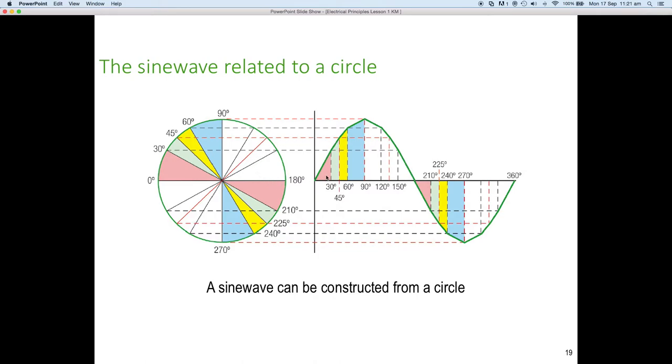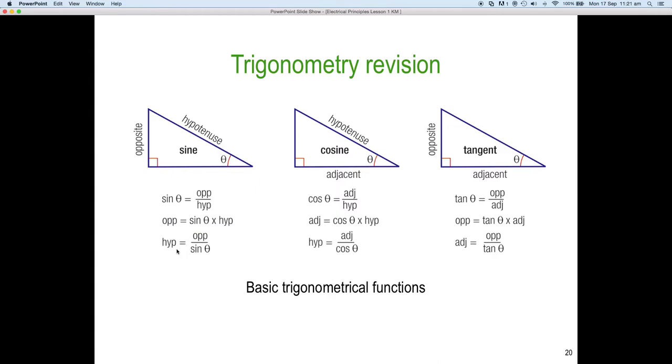And because we have this right-angled triangle and we have this trigonometrical ratio, particularly around sine, but we also have cosine and tan, which allows us to use some trigonometry to do calculations around electrical circuits. So, let's have a look at that a little more closely.